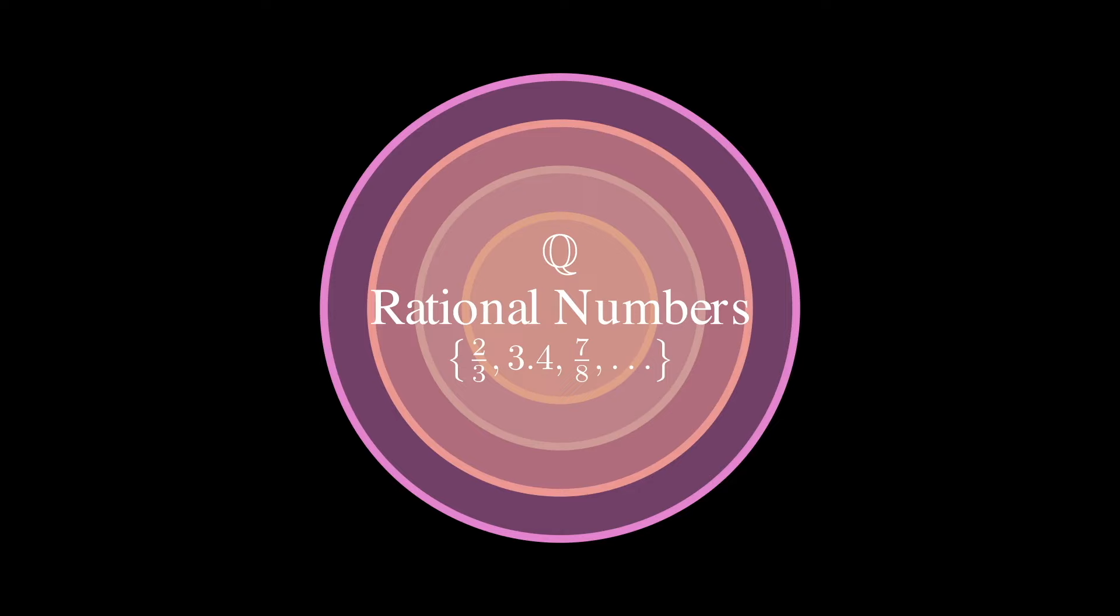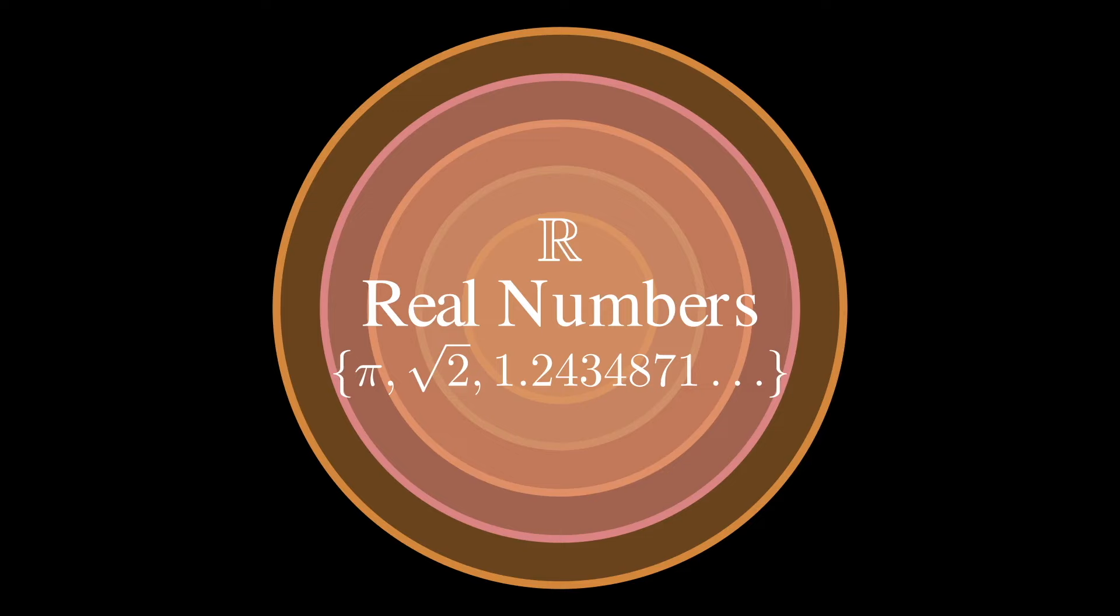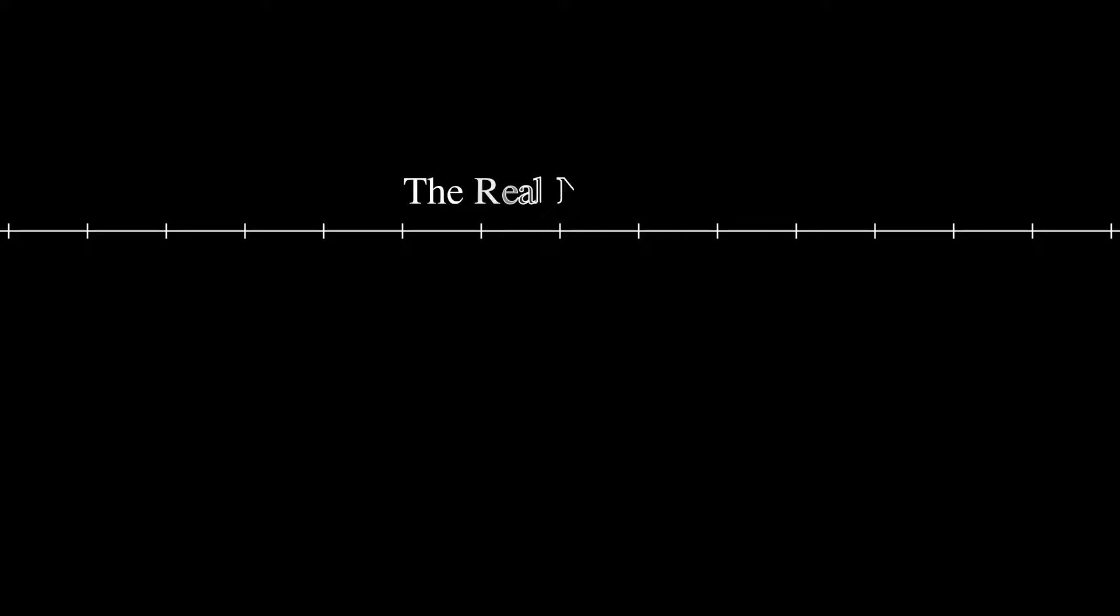They fill in the gaps, so to speak, between rational numbers and complete the continuum of the real number line. Which brings up the concept of real numbers. This category encompasses both rational and irrational numbers, forming a complete and continuous set that fills the entire real number line.